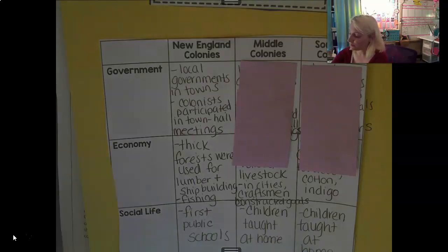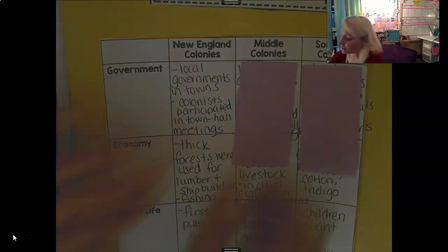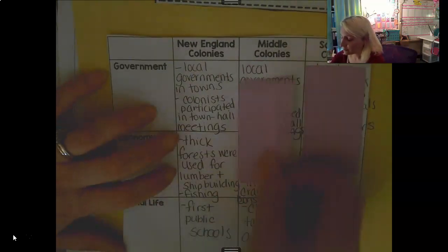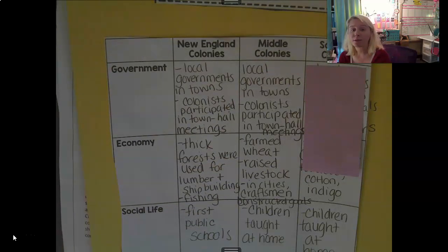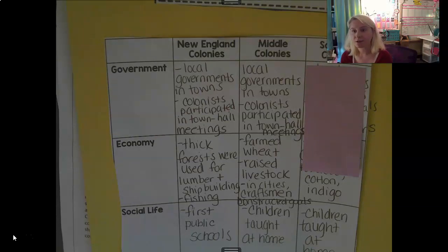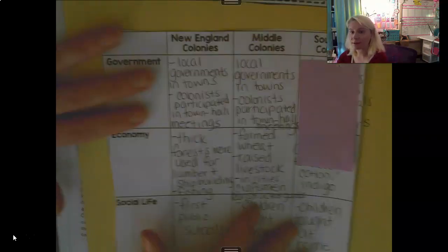For the middle colonies — that would be New York, Pennsylvania, and New Jersey — same thing. Local governments were towns, and colonists participated in town hall meetings to let their voices be heard and their opinions be known. If you need to pause the video, go ahead, because I'm going to move on to the southern colonies.